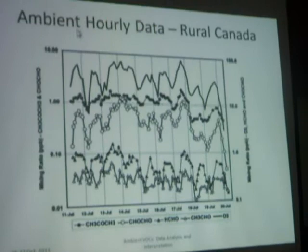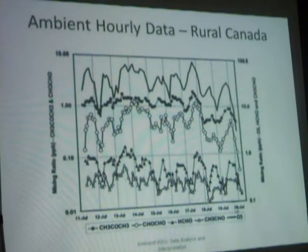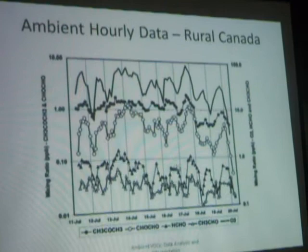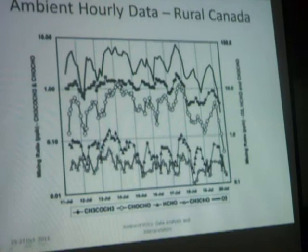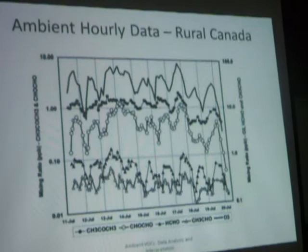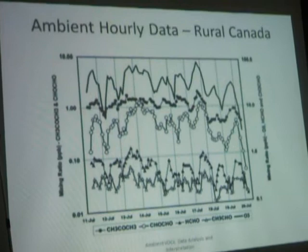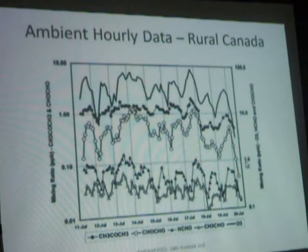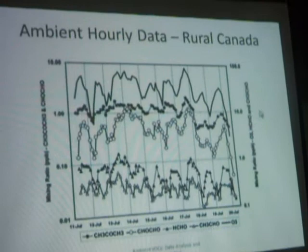The solid line at the top is ozone. The other symbols reflect different carbonyl compounds. The triangles here are formaldehyde, shown on the scale on the right — we're looking at sub-part-per-billion levels. All of this data is from a rural area in Canada, north of Toronto, with nothing nearby. Concentrations of carbonyl compounds are pretty low. Formaldehyde and acetaldehyde are both, most of the time, below one part-per-billion concentration. You can see, given the variability, that you need a lot of sensitivity.